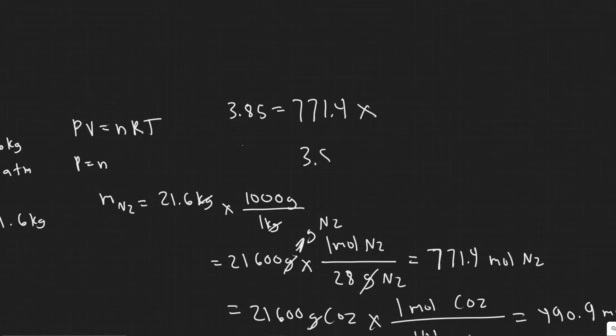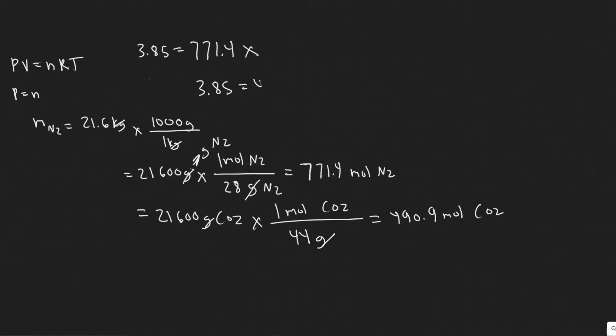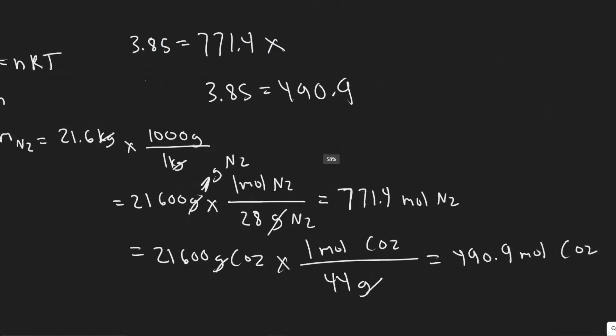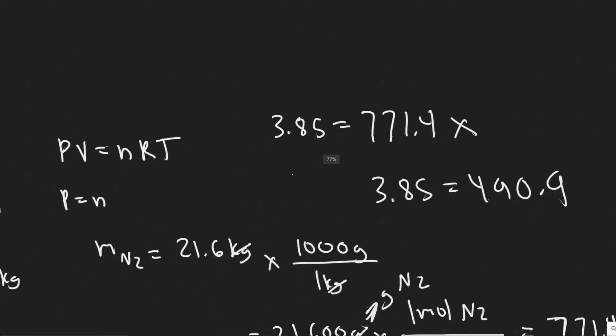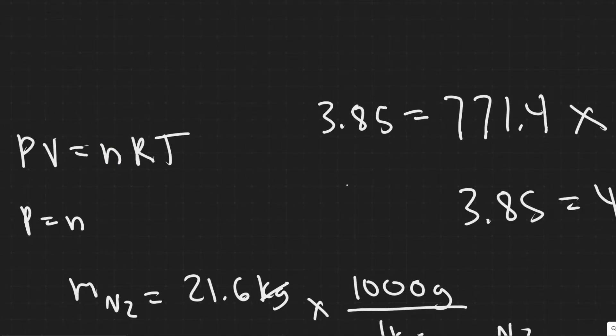But we know that now we're going to have 490.9. So the number of moles are actually going to decrease. And if this number decreases, we know that this value is going to decrease. If you just look at the equation, if the number of moles decrease, your pressure is also going to decrease. But how much is it going to decrease?